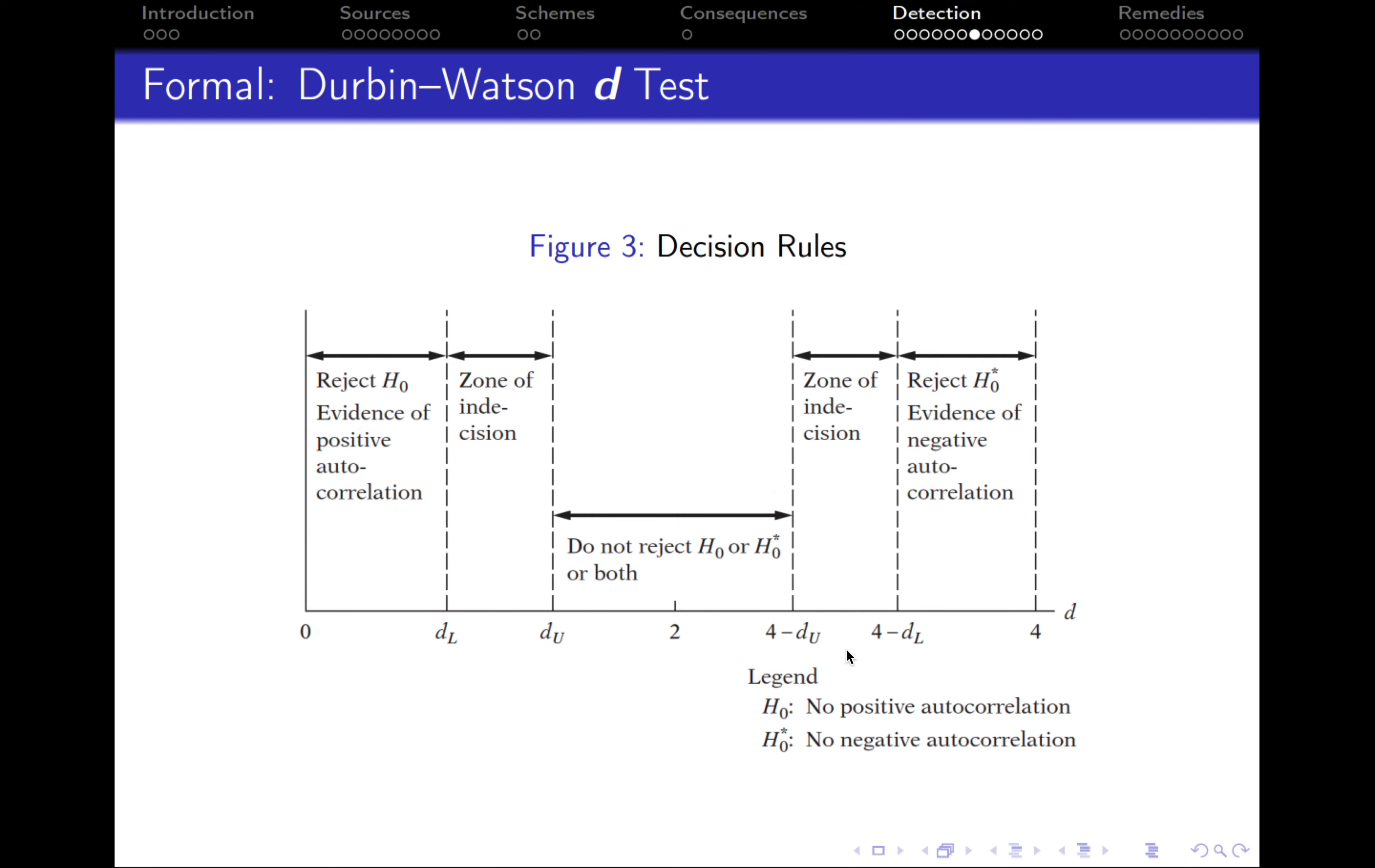And now let's have a look at the decision rule. So this is the schematic way it can be approached. The null hypothesis is that there is no positive autocorrelation, or the alternative null hypothesis is that there is no negative autocorrelation. From this graph, you can also see that we will need two values, DL and DU.